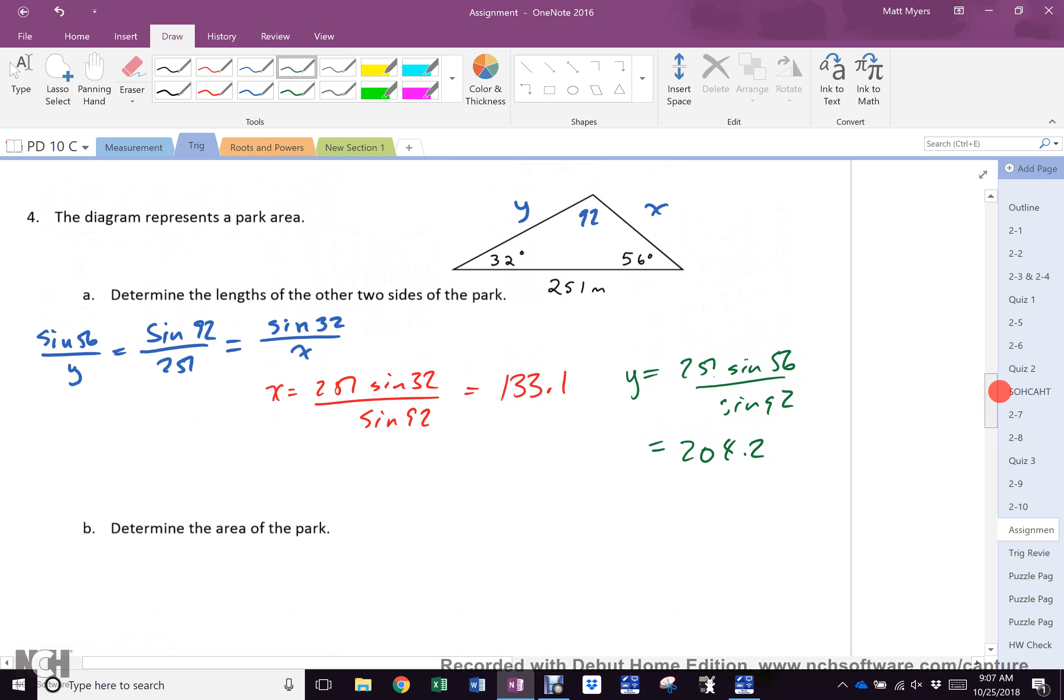Determine the area of the park. Well, to do the area of the park, I've got a base, but I just need a height. So, all I've got to do is, since I know x is 133.1, I know this height, and I'm going to call it w. No, w is bad. I'm going to go ahead. I don't want to call it h because of hypotenuse, but I am going to call it h.